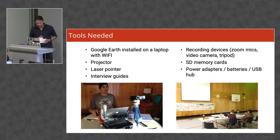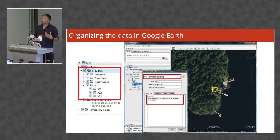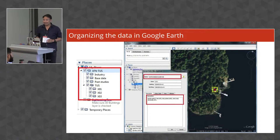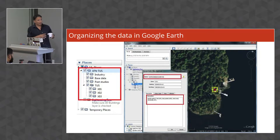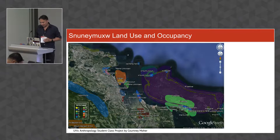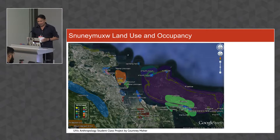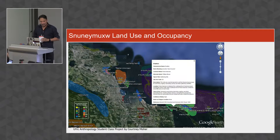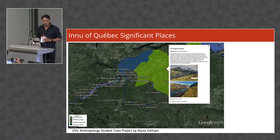When we use Google Earth we organize data using the places panel on the left-hand side — folders where we store everyone's data. We have information based on past info, potential project data, and other base information such as place names, rivers, lakes, parks, and other identifiable features that help the participant understand the map. Here's an example from Brian Tom's UVic Anthropology student class project on Land Use and Occupancy. When you click on the points, you get a really nice dialogue box full of information about that place — same with the Innu of Quebec Significant Places, which has beautiful photos when you click on it.